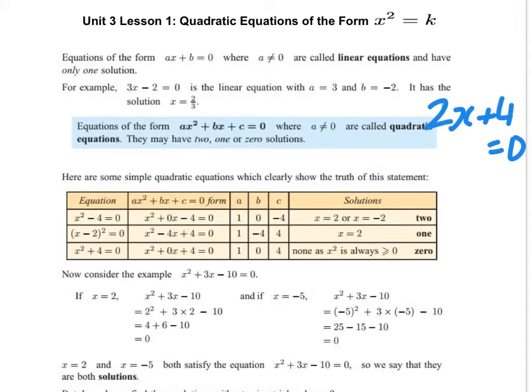So a quadratic is where you have the highest power of x is 2. The form of it is ax squared plus bx plus c equals 0. So that's a quadratic equation. For example, if you have 3x squared plus 6x minus 4 equals 0, your number of x squareds, 3 corresponds to a, 6 corresponds to b, and minus 4 corresponds to c. So this is a quadratic equation.